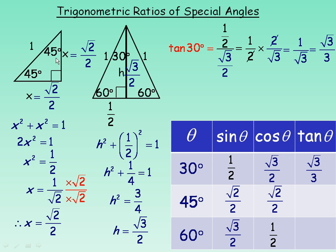For tan of 45°, we go back to the isosceles right triangle. Tan is opposite over adjacent: root 2 over 2 divided by root 2 over 2. We're dividing the same value, so the result is 1. Therefore, tan 45° = 1.